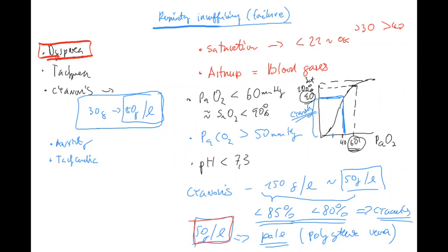When thinking about cyanosis, always think of the total hemoglobin level. The 80–85% saturation thresholds for cyanosis assume normal hemoglobin of 150 grams per liter. Also remember the decreased pH as an important parameter. And the supplementation of oxygen is crucial.